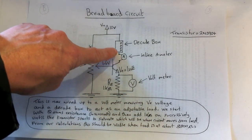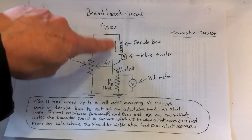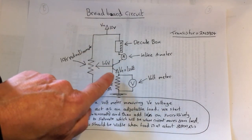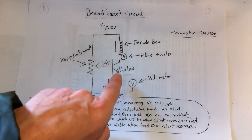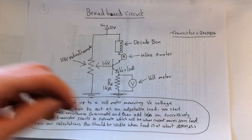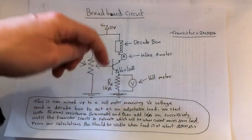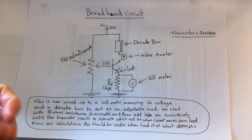We've got an inline ammeter here so we can measure the current that's going through this collector path, and then at the emitter we've got a voltmeter across the emitter resistor so that we can see that the 1 volt is maintained.